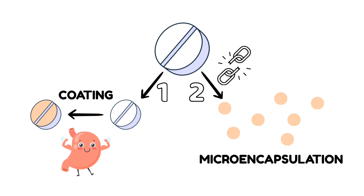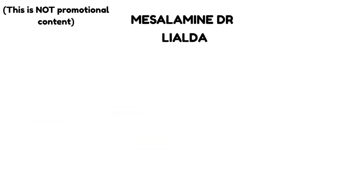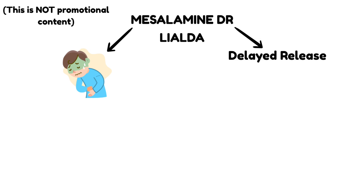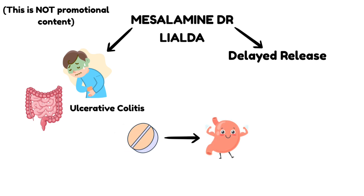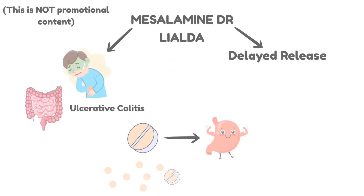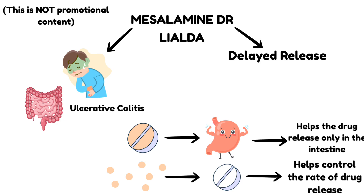Some companies use both coating and microencapsulation together. Mesalamine DR, marketed under the name Lialda, is an excellent example. DR stands for delayed release. Mesalamine is used for inflammatory diseases such as ulcerative colitis, meaning it should be released in the intestines. This is why it is coated using enteric coating, which helps the formulation bypass the stomach completely. It is simultaneously microencapsulated in order to sustain the release of the drug after it has reached the intestine.